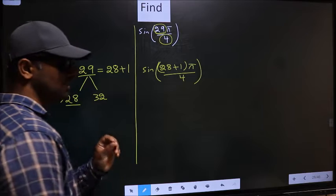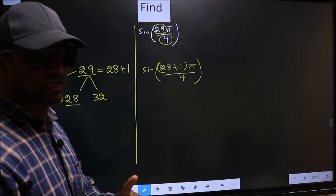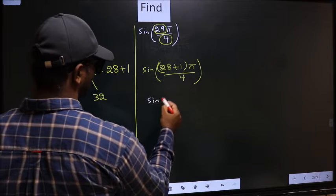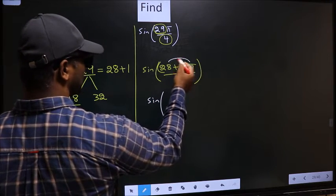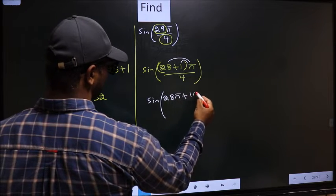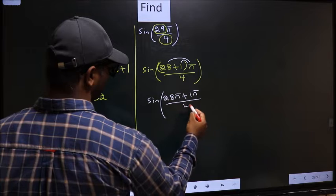This is step 1. Next, sine of—you should open up the brackets. You get 28π plus 1π, by 4.